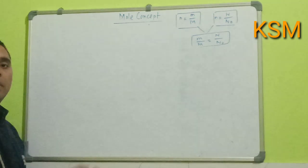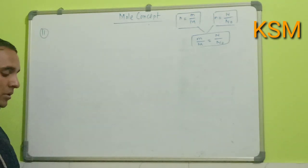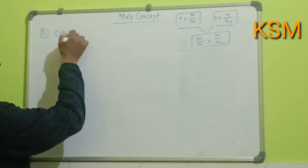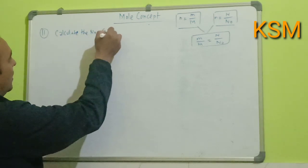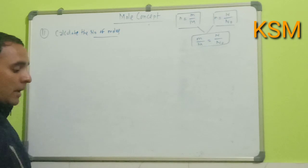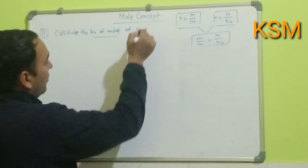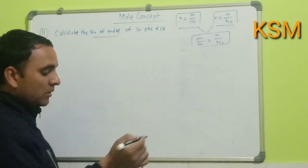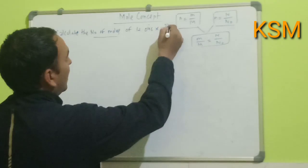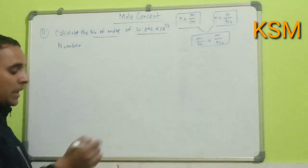Hello everyone, let's see question number 11. In this question, calculate the number of moles of 12.046 × 10^23 helium atoms.